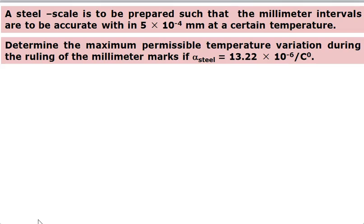Next, a steel scale is to be prepared such that the millimeter intervals are to be accurate within 5×10⁻⁴ mm at a certain temperature. Determine the maximum permissible temperature variation during the ruling of the millimeter marks if alpha of steel is 13.22×10⁻⁶ per degree Celsius. The question is that we have a steel scale with millimeter intervals.